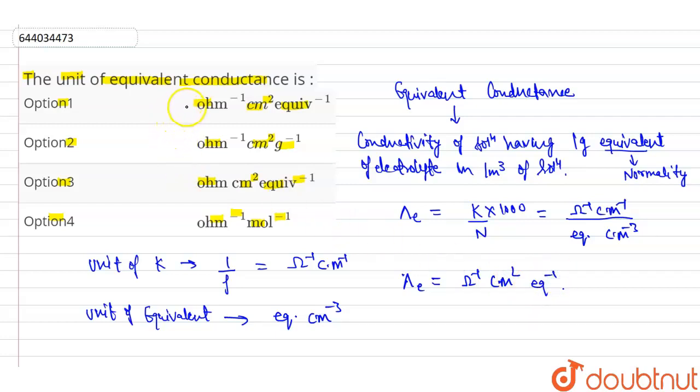Now our option is per ohm centimeter square per equivalent. Our first option is the correct option.